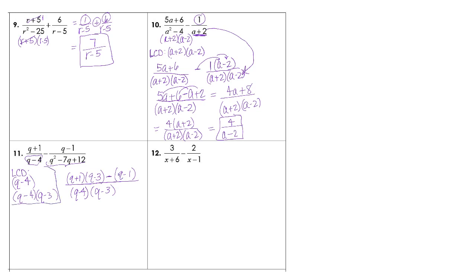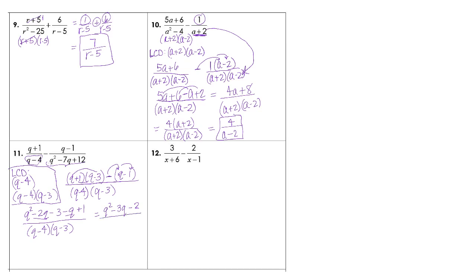So in the top we're going to have q squared, then negative 3q and positive q — so that's negative 2q minus 3 — then distribute my negative, giving minus q plus 1. Please do not multiply out the denominator — never, ever, ever do that. Combining in the numerator: q squared, negative 2q minus q is negative 3q, and minus 2. That's all over q minus 4 times q minus 3. We're not finished — we have to go back and factor the numerator just in case.